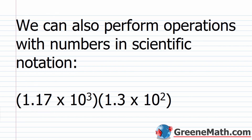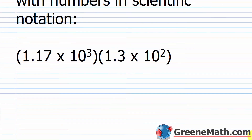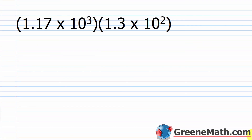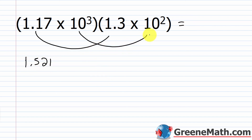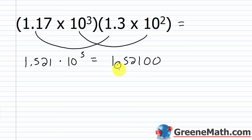We can also perform operations with numbers in scientific notation. For 1.17 times 10 cubed times 1.3 times 10 squared: multiply 1.17 by 1.3 to get 1.521, then use the product rule for exponents — 10^3 times 10^2 equals 10^5. The result is 1.521 times 10 to the 5th, or 152,100.